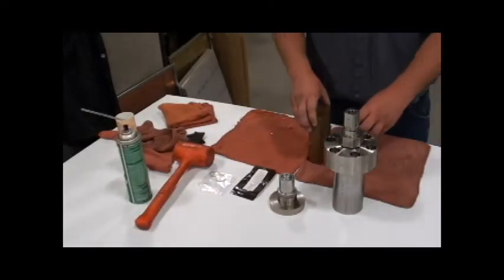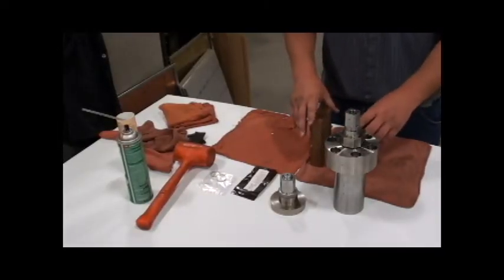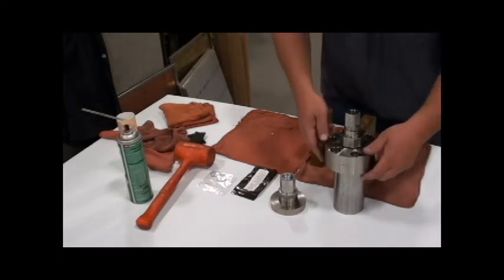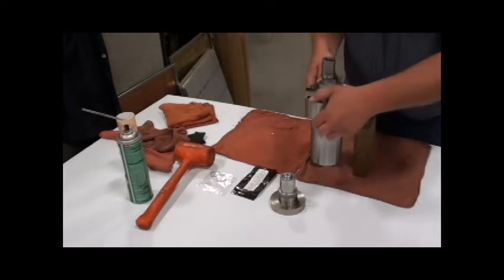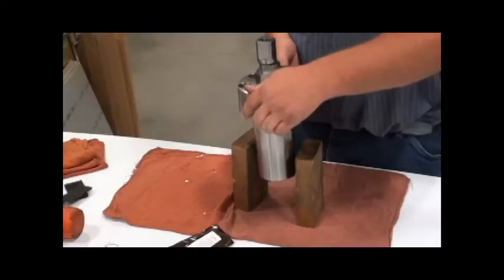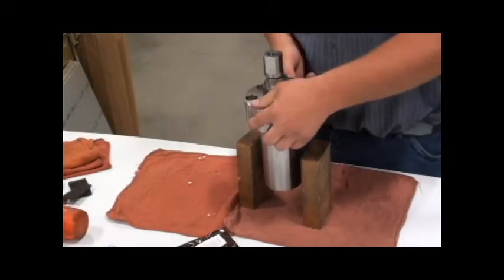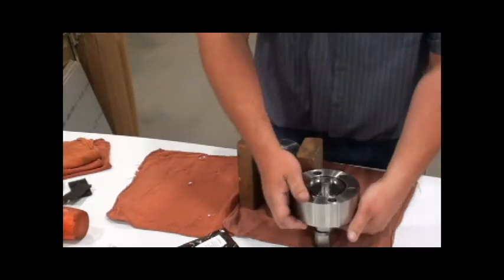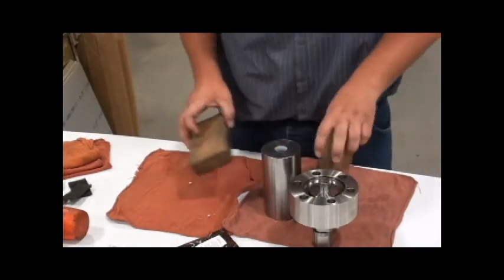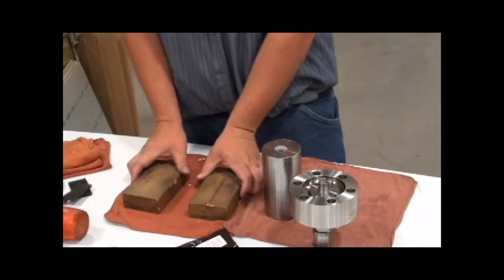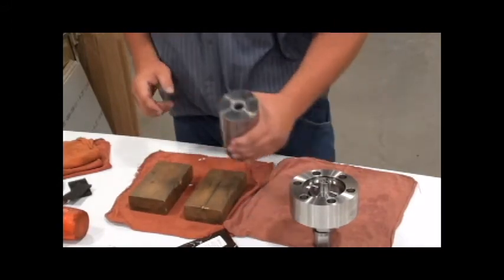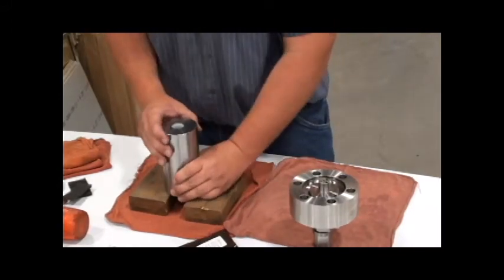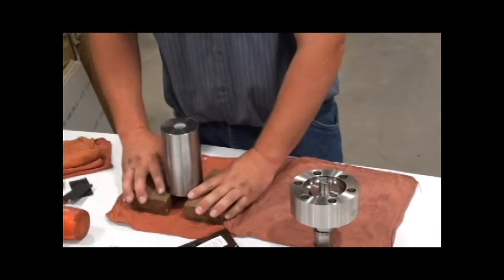Now we can separate the high pressure end cap and the high pressure cylinder. Set the cylinder on two blocks that are slightly taller than the cylinder, and separate the end cap from the cylinder. Lay the blocks down flat and place the high pressure cylinder on the blocks, leaving a gap between the blocks so they don't obstruct the seal from coming out.